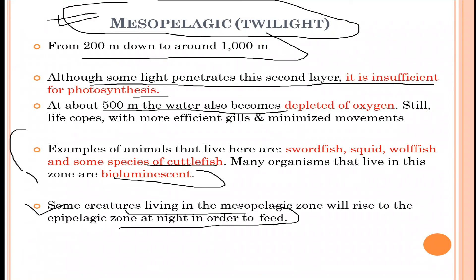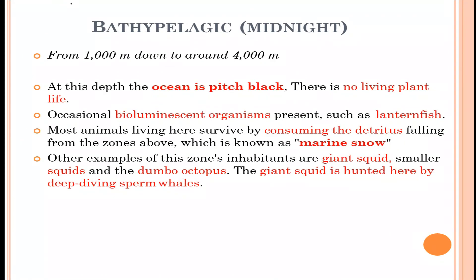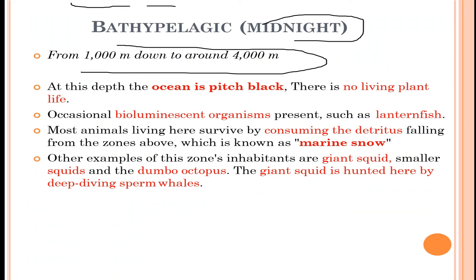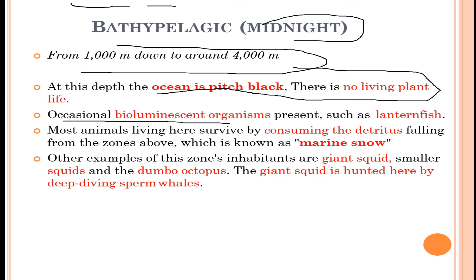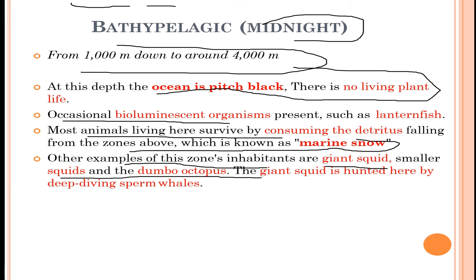Next is the bathypelagic zone, the midnight region, going down to 4000 meters. At this depth the ocean is pitch black with no living plant life. Occasionally bioluminescent organisms such as lanternfish are present. Most animals survive by consuming detritus falling from the zones above — known as marine snow. Other inhabitants include giant squid, smaller squids, and the dumbo octopus.